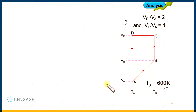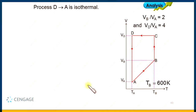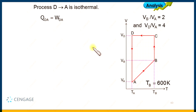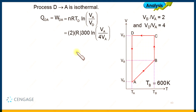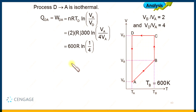Now let us move to the final process, DA. DA is again an isothermal process. For the isothermal process, ΔU = 0, so Q_DA = W_DA. Using the formula W = nRT_D · ln(V_A/V_D), with T_D = 300 K, V_D = 4V_A: W_DA = 2 × R × 300 × ln(1/4) = 600R × ln(1/4) = -1200R ln2. This negative sign represents heat rejected by the system.